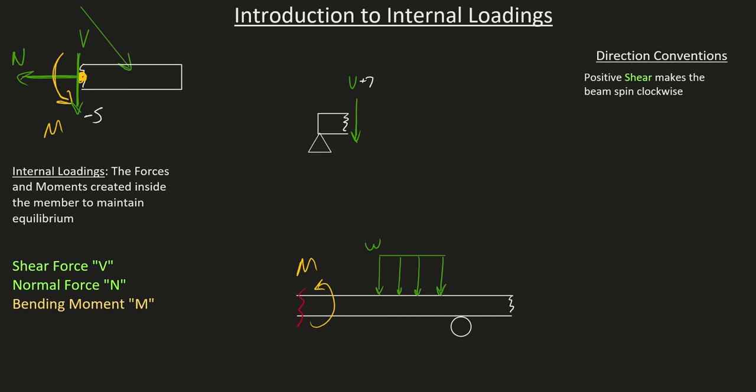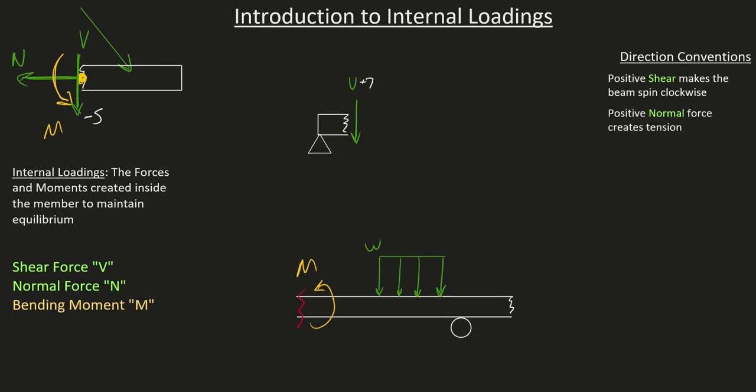Alright, now for our normal force. So, positive normal force creates tension. So, over here, we learned that we needed a normal force going to the left to keep everything still. This normal force looks like it wants to stretch this beam like a rubber band. So, this is tension right here. So, therefore, whatever number we calculate for that normal force, we would just put a positive sign on it. If I got 10 newtons, I would put that I got positive 10 newtons of normal force. And again, don't get confused, left doesn't mean positive normal force. Over here, this would be a positive normal force because it's creating tension.